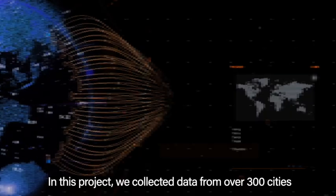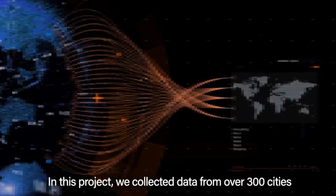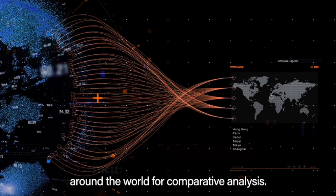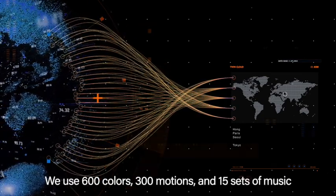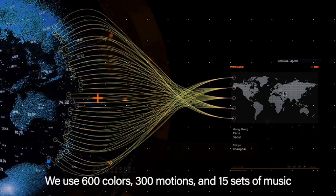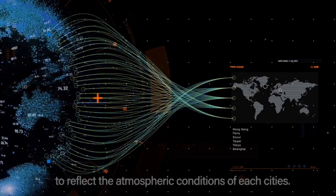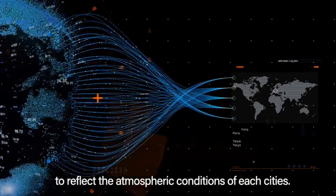In this project, we collect data from over 300 cities around the world for comparative analysis. We use 600 colors, 300 motions, and 15 sets of music to reflect the atmospheric condition of each city.